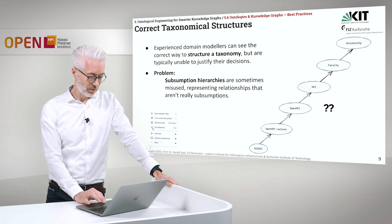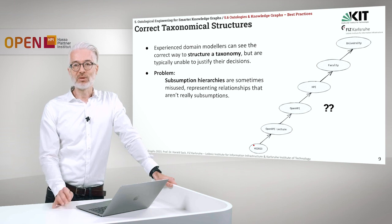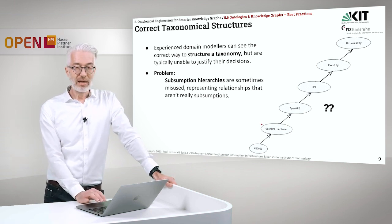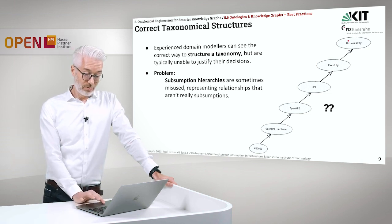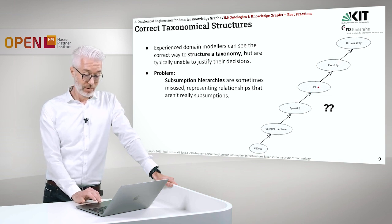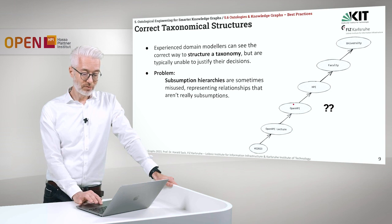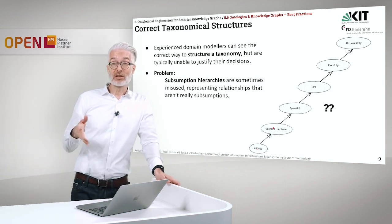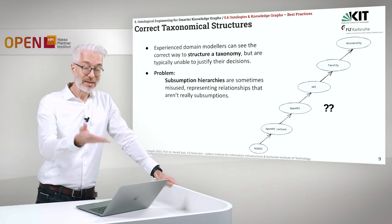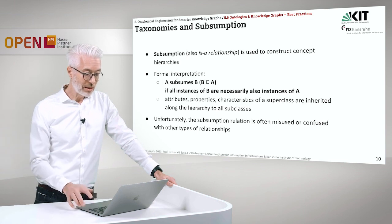For example, we have here our course KG 2023, which is an OpenHPI lecture. OpenHPI lecture is put under OpenHPI, which is put under HPI, under faculty, which is part of the university. Faculty is not a university — it's part of a university. HPI is a faculty. OpenHPI is part of HPI. Knowledge Graph 2023 is an OpenHPI lecture. You see, there are many different relations involved, which are not necessarily a subclass relation — these are broader concepts, but it's not a real subsumption.